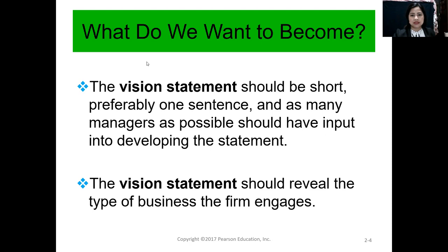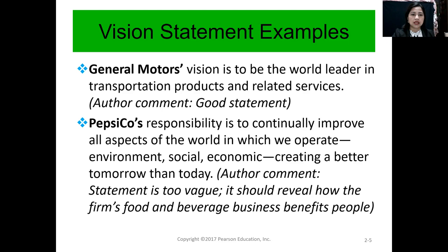The vision statement should be short — preferably one sentence — and as many managers as possible should have input into developing it. The vision statement should reveal the type of businesses the firm engages in. As we go along, you will see how companies do their vision statements. Here is an example: 'Vision is to be the world leader in transportation products and related services.' This is considered a good statement — very short, and you can clearly see the vision: world leader in transportation products and related services.